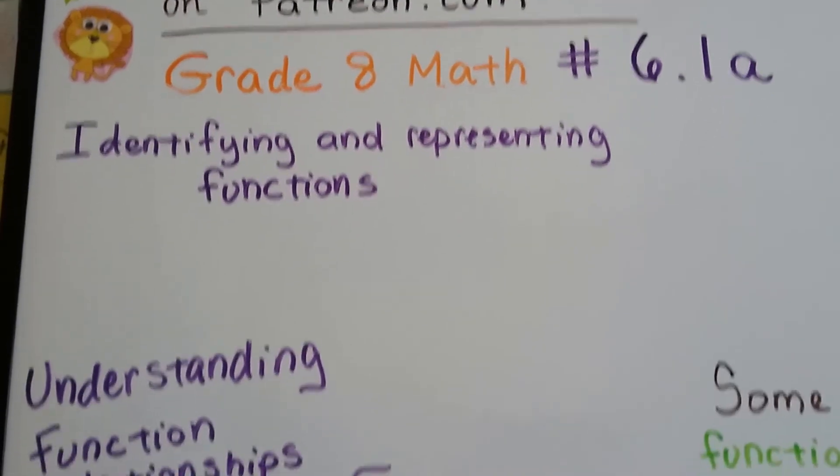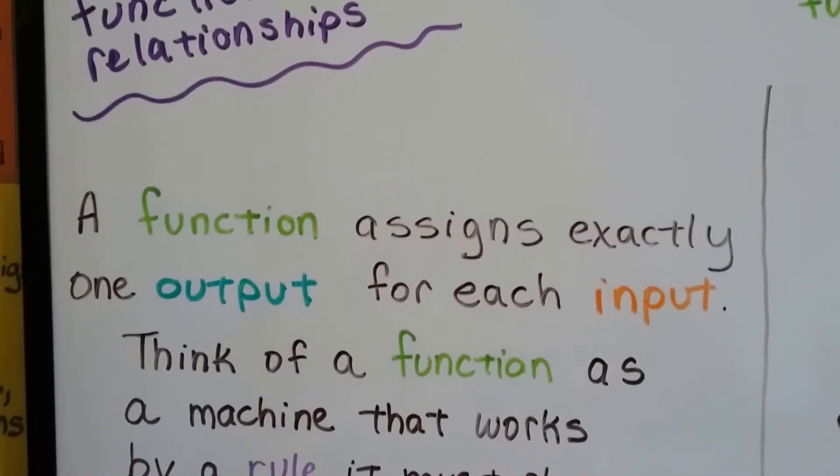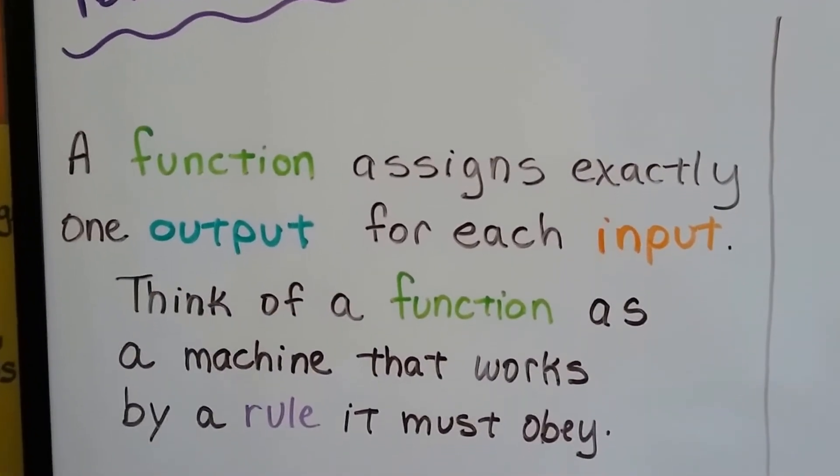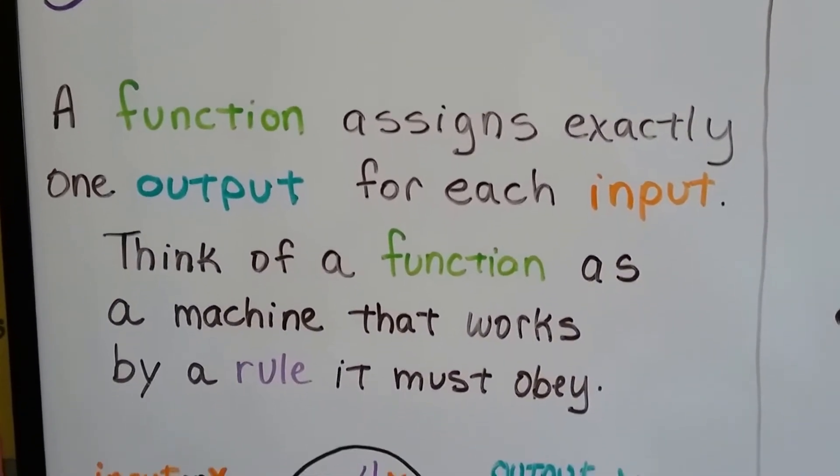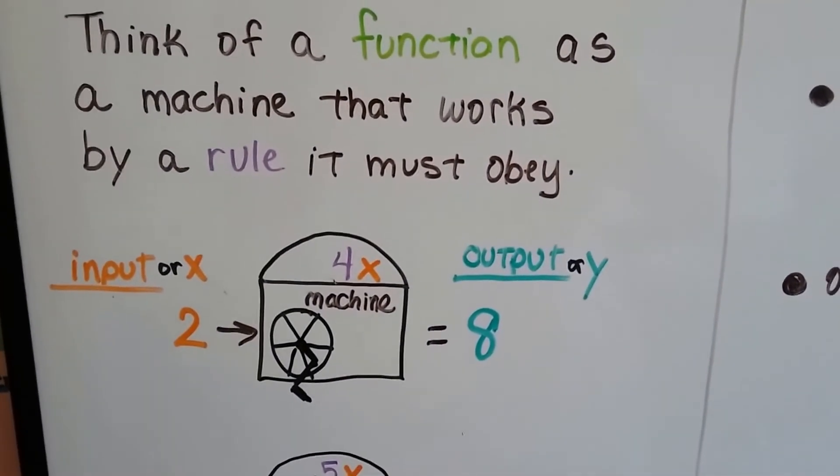So here's our first one. To understand function relationships, a function assigns exactly one output for each input. Think of a function as a machine that works by a rule that it must obey.